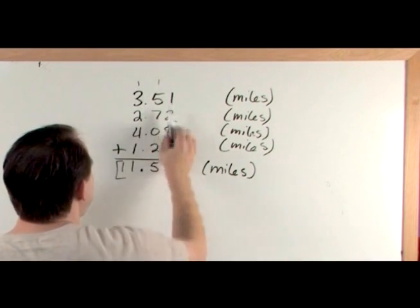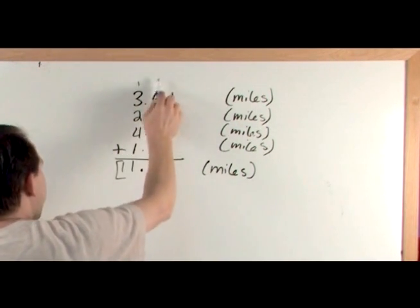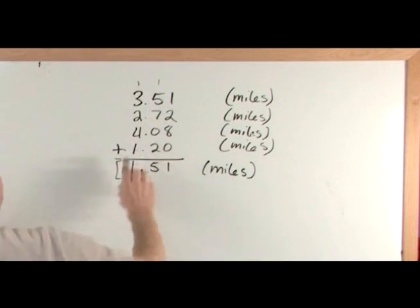Start at the right column, add them up, carry the 1. Add all of these up, you get 15, carry the 1. Add all of these up, get 11. Let's go.